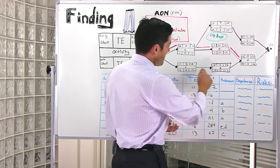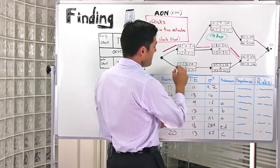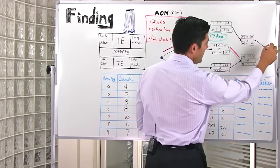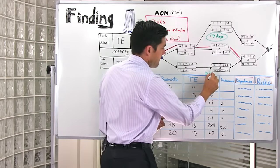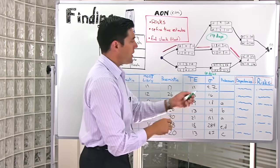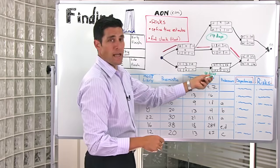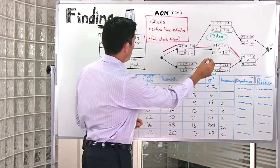Again, let's look at this bottom path. Between paths B, D, F, and then finish, I've got six days of slack. Quite simply, it's 13 from 19 days.